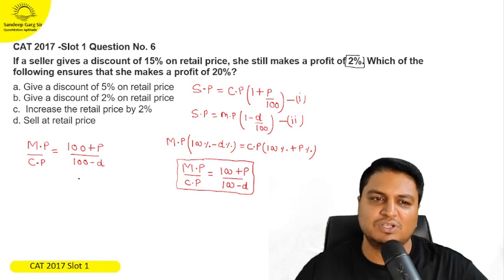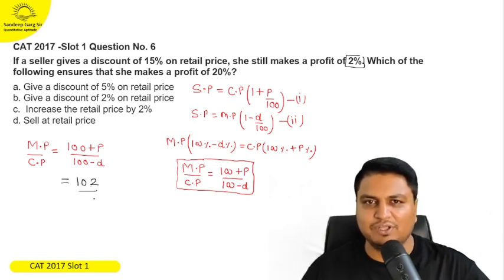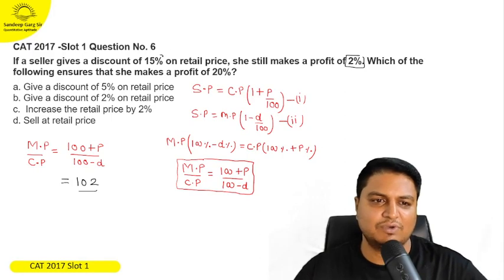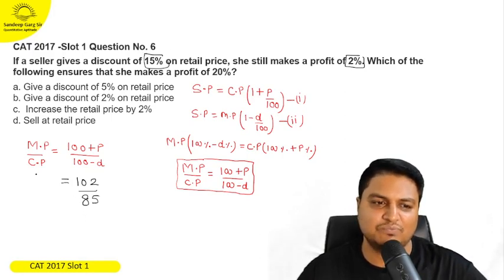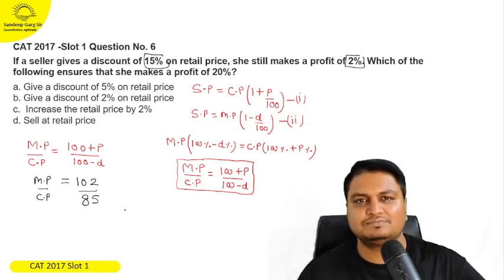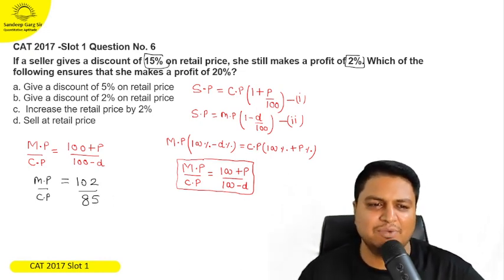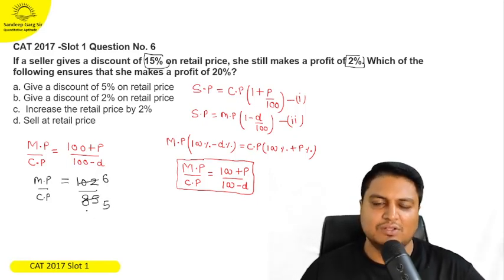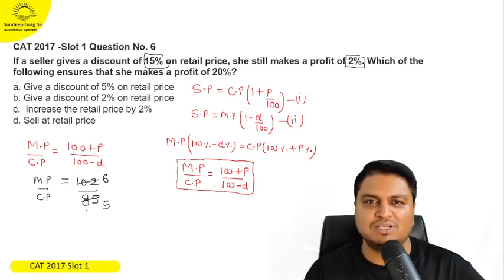Now we can see here, we need profit 2 percent, so you put 2 on top. So 100 plus 2, it will be 102. And we give the discount 15 percent on the retail price. So it will be 85 percent. So this means MP upon CP, the value is 102 upon 85. And if we take out common 17, this value comes out to be 6 by 5.